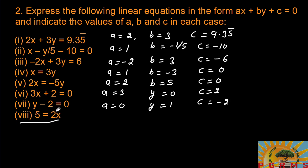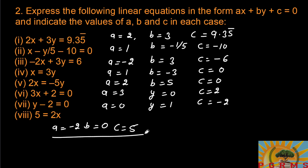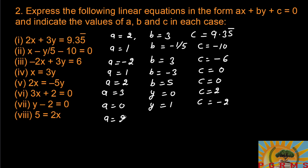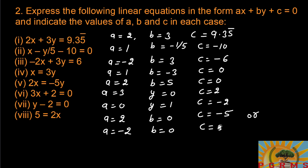Now the last one. Bringing 2x to the left side makes it negative, so a equals minus 2. There is no y term, so b equals 0, and c equals 5. Alternatively, you can keep 2x on the right side, giving a equals 2, b equals 0, and c equals minus 5. Both approaches are valid, and this completes the exercise.